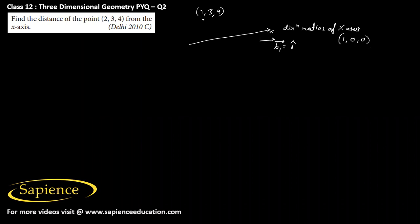Let's say the given point is A, and we have to find the distance of this point from the x-axis. We draw a perpendicular from point A on the x-axis; let's say it meets the x-axis at point M. So we have to find the length AM, which is the perpendicular from the given point to the x-axis.